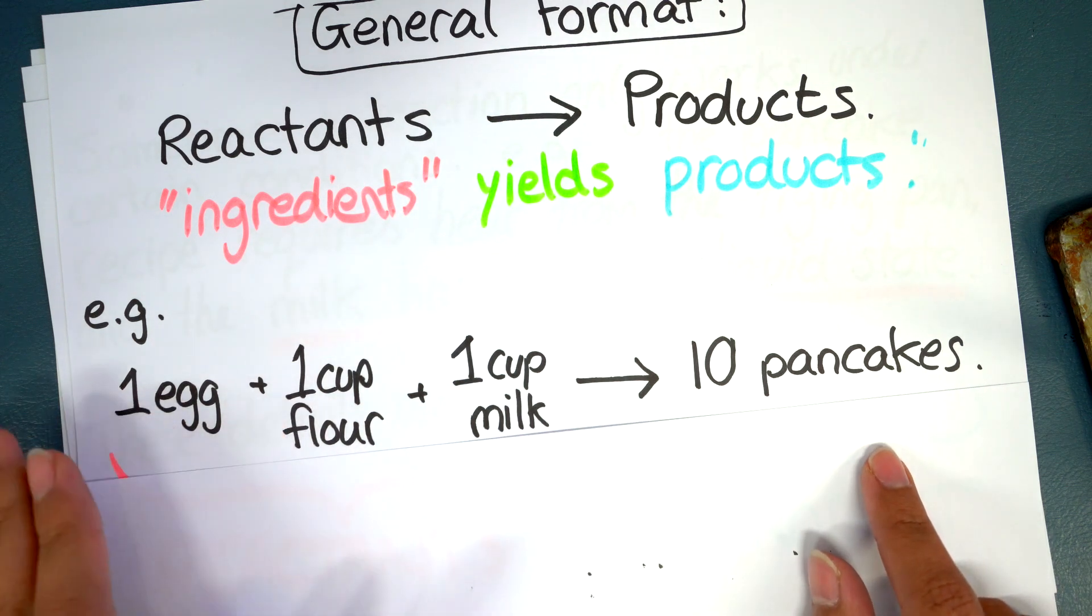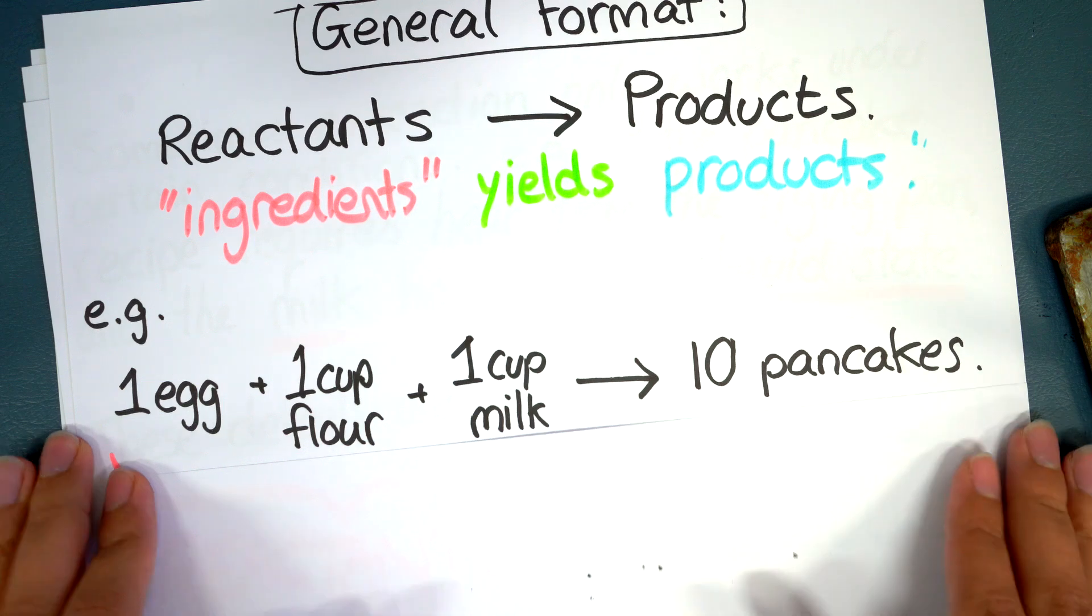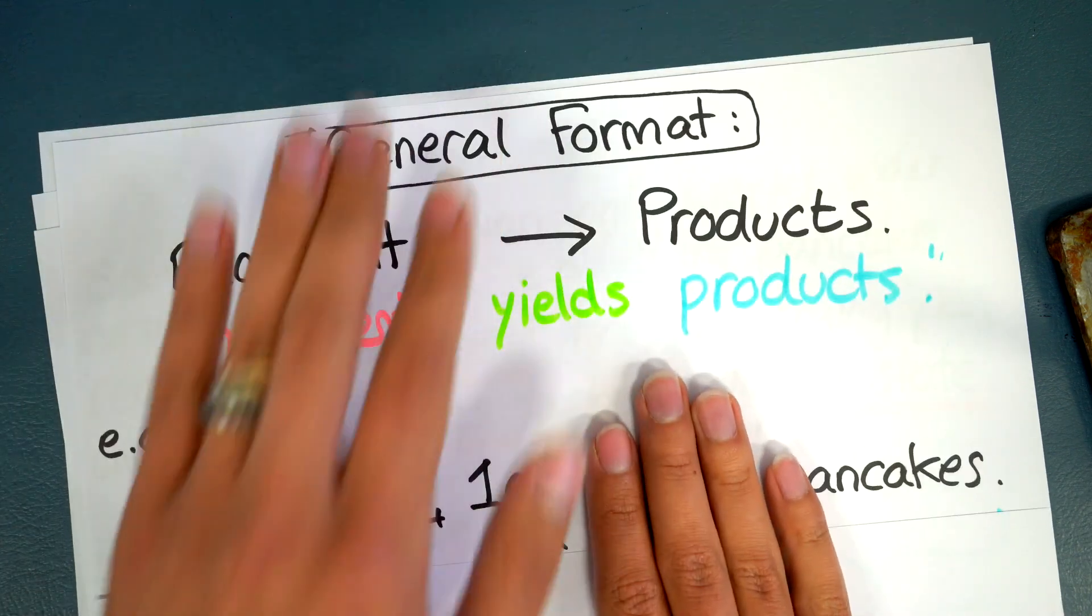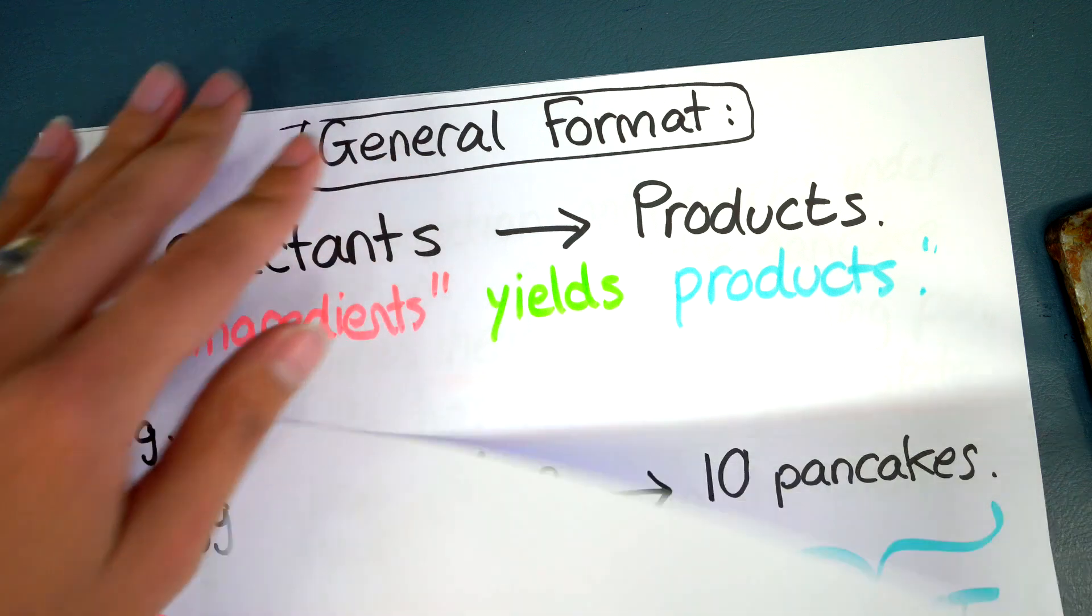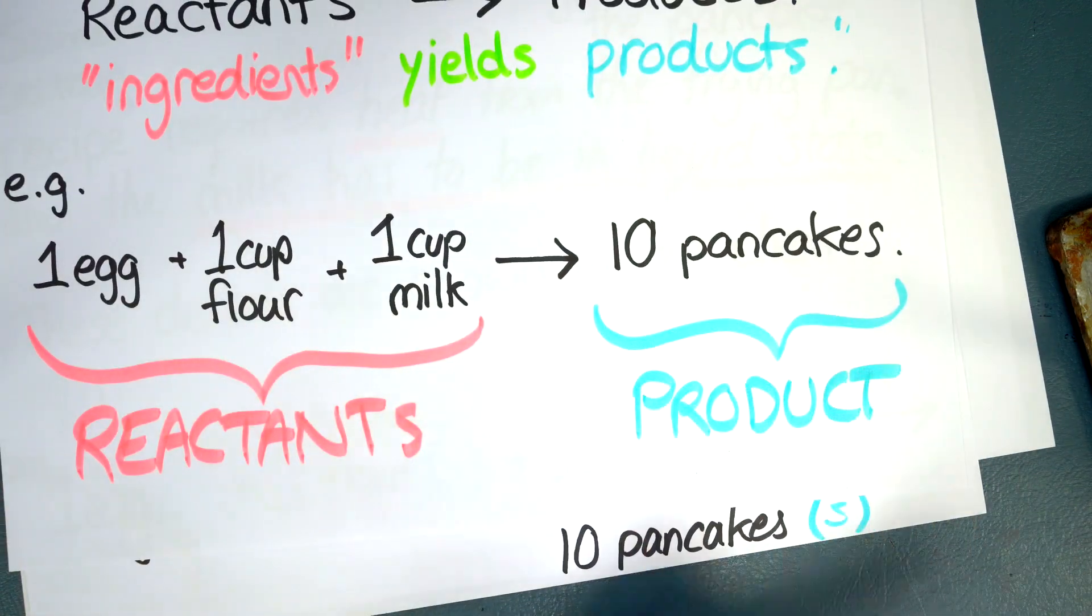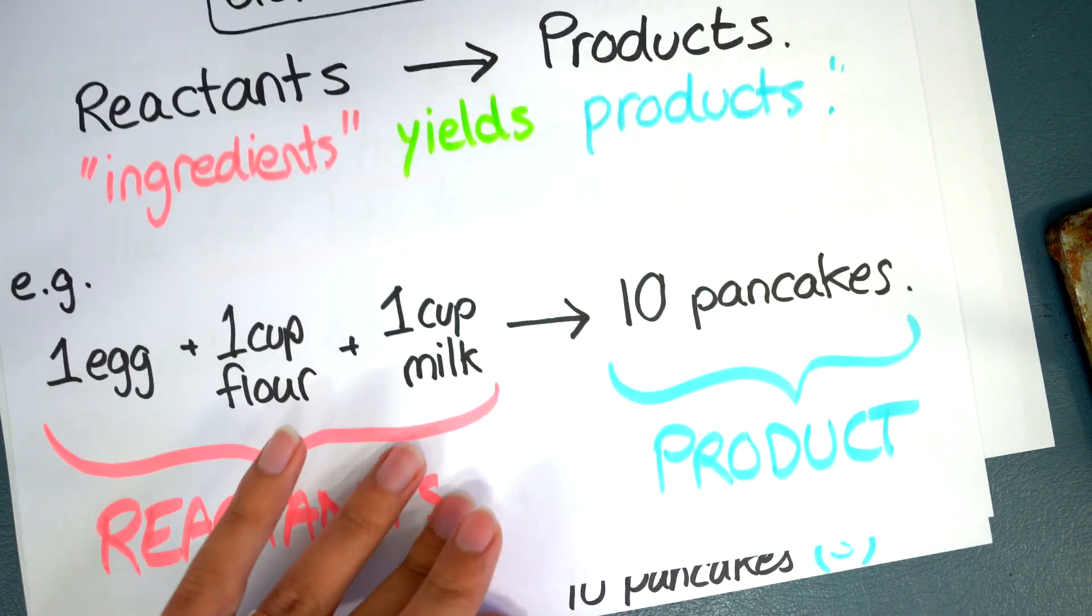All right but it gives you an indication of what a chemical equation looks like. So here on the left hand side I've got the ingredients which in chemistry we call those reactants. So I've got them listed here in highlighted red. So these are my reactants and the pancakes is the products that we are producing from this chemical change.